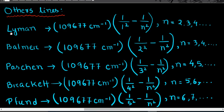The first scientist was Lyman, who gave an expression in which the wave number is the same constant × (1/1² − 1/n²), where n can have values of 2, 3, 4, and so on. Another scientist, Paschen, gave an expression in which the wave number is the same constant × (1/3² − 1/n²), where n can have values of 4, 5, 6, and so on.